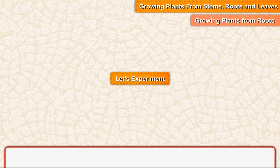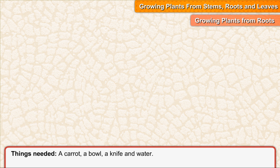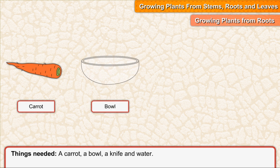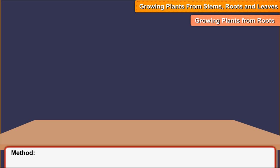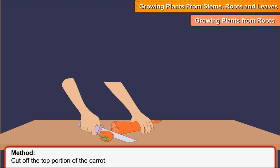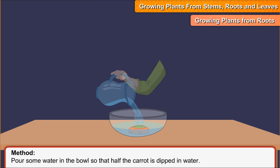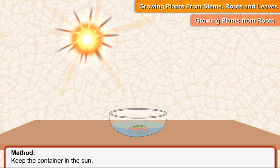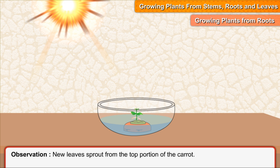Let's experiment. Aim: To grow a plant from a carrot. Things needed: a carrot, a bowl, a knife, and water. Method: Cut off the top portion of the carrot. Keep the cut part in the bowl with the top portion upward. Pour some water in the bowl so that half the carrot is dipped in water. Keep the container in the sun. Observe the carrot for a few days. Observation: New leaves sprout from the top portion of the carrot.